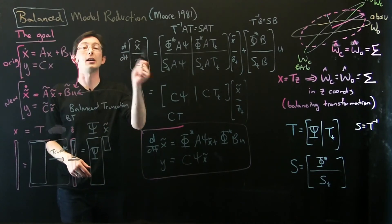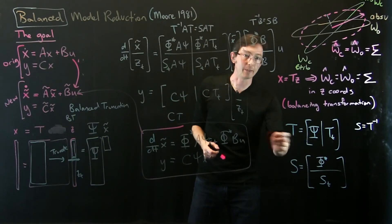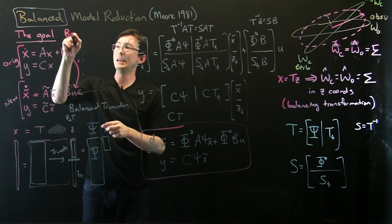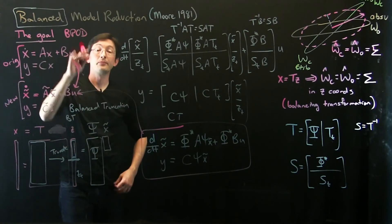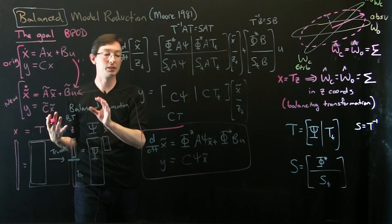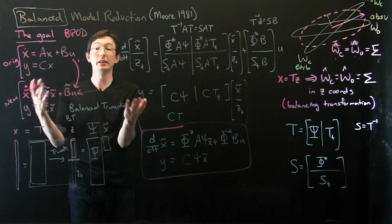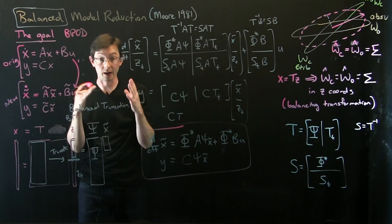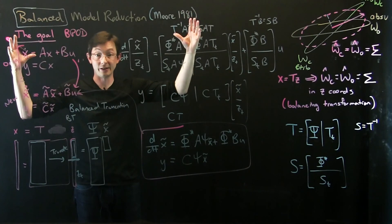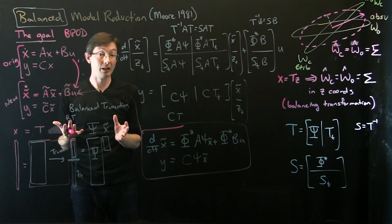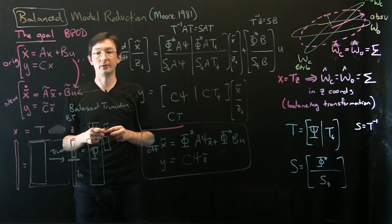So we need to think about how to approximate these from data. What we're going to talk about next is balanced POD, with major contributions by Karen Willcox and Clancy Rowley, using data-driven approaches to approximate the transformations psi and phi at scale — scaling to million or billion-dimensional systems without ever explicitly building a Gramian. That's coming up next: how to take Moore's balanced truncation and scale it up to very large systems using a data-driven approach.